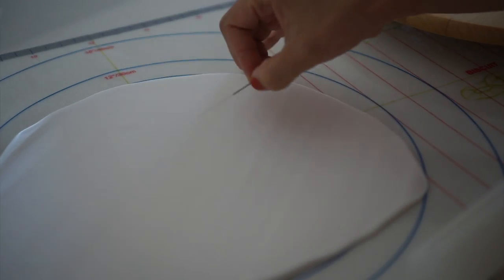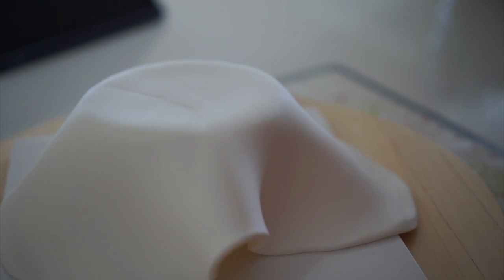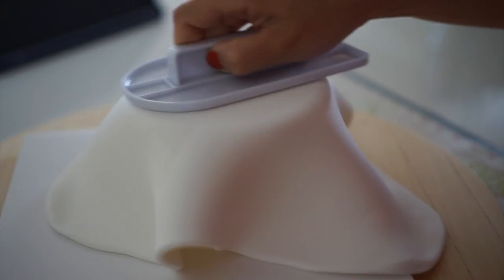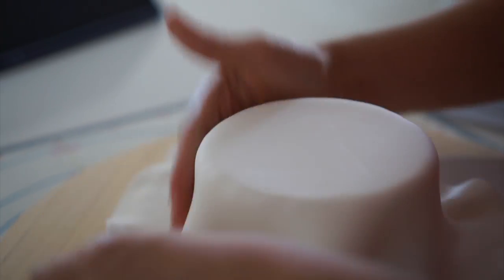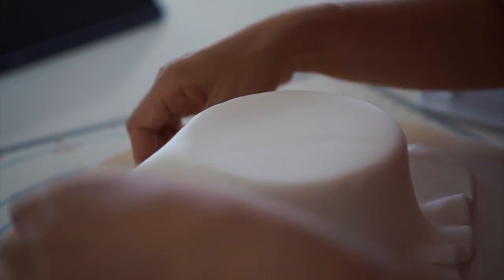Once your fondant is rolled out, drape it carefully over the cake and use your hands to smooth out any wrinkles or air bubbles. You can also use a fondant smoother to help you create sharp edges.